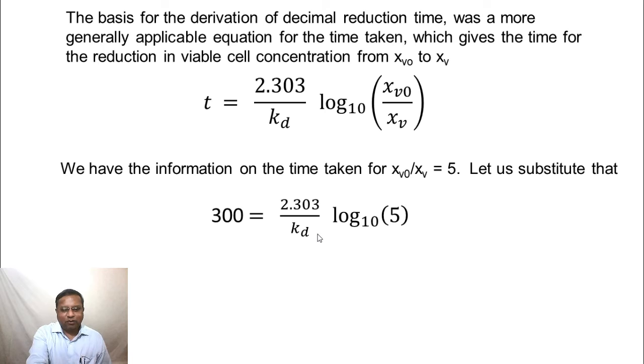So kd is the only variable here. And kd, if we transpose this or essentially multiply both sides of the equation, you can do the same things to both sides of the equation. If we multiply this side by kd and this side also by kd, and divide this side by 300 and this side also by 300, we get kd equals 2.303 by 300 log 5 to the base 10, which turns out to be 5.37 times 10 power minus 3 second inverse.